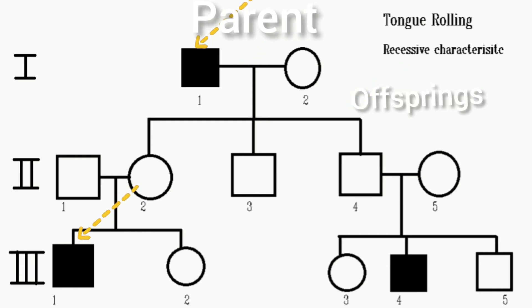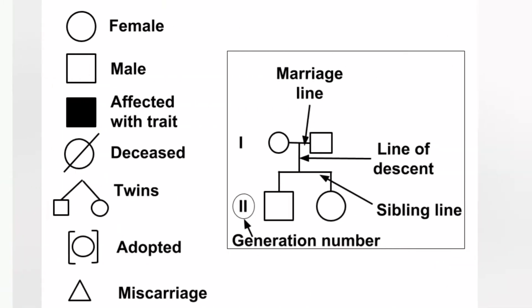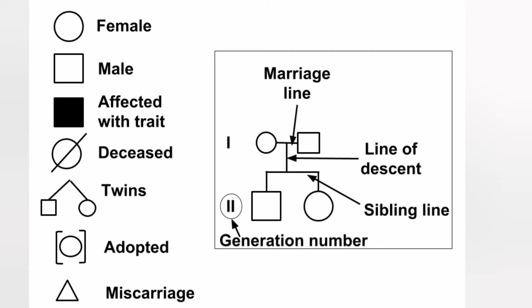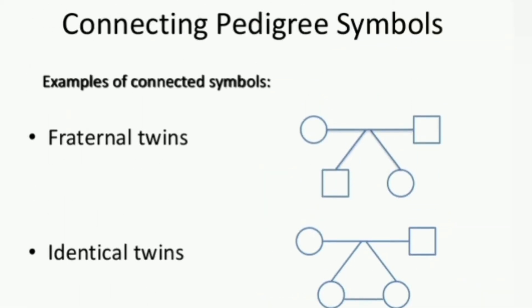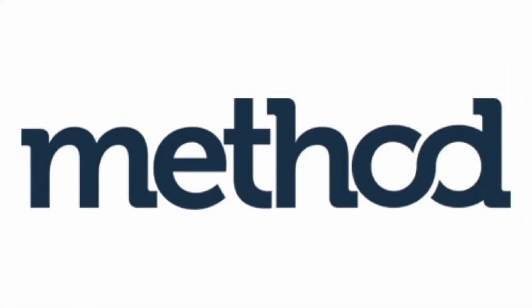The shaded symbol shows the affected or diseased parent or child. There are also symbols showing unaffected offspring, carrier symbols for the disease, and symbols for twins — identical twins or fraternal twins.